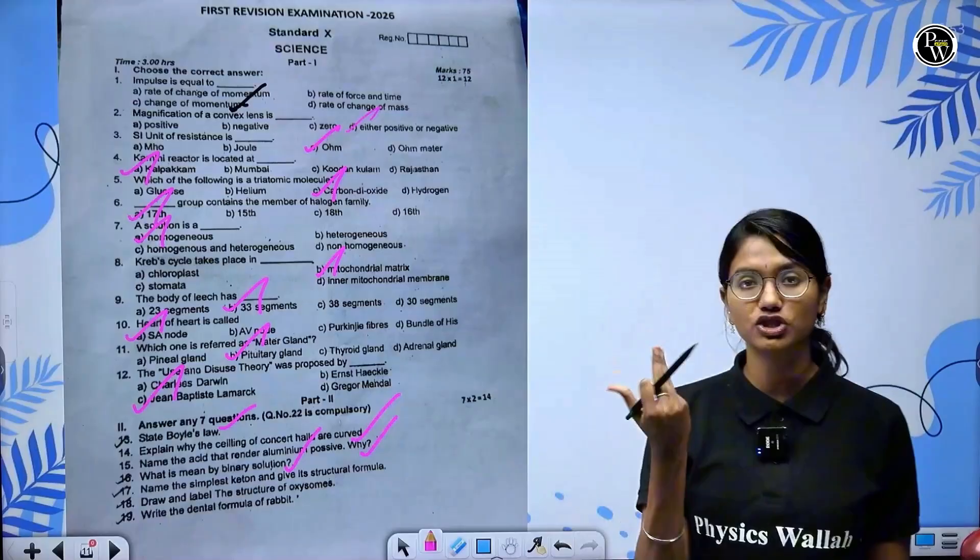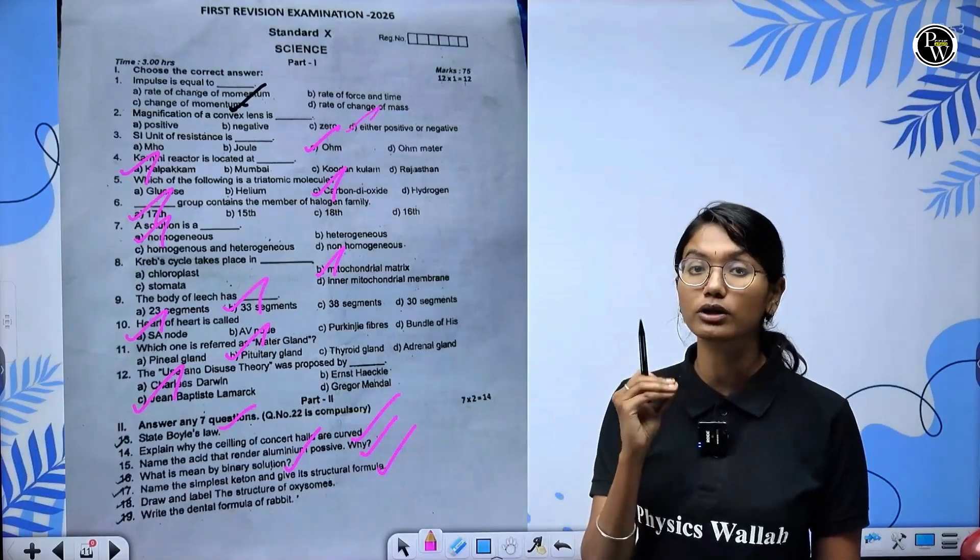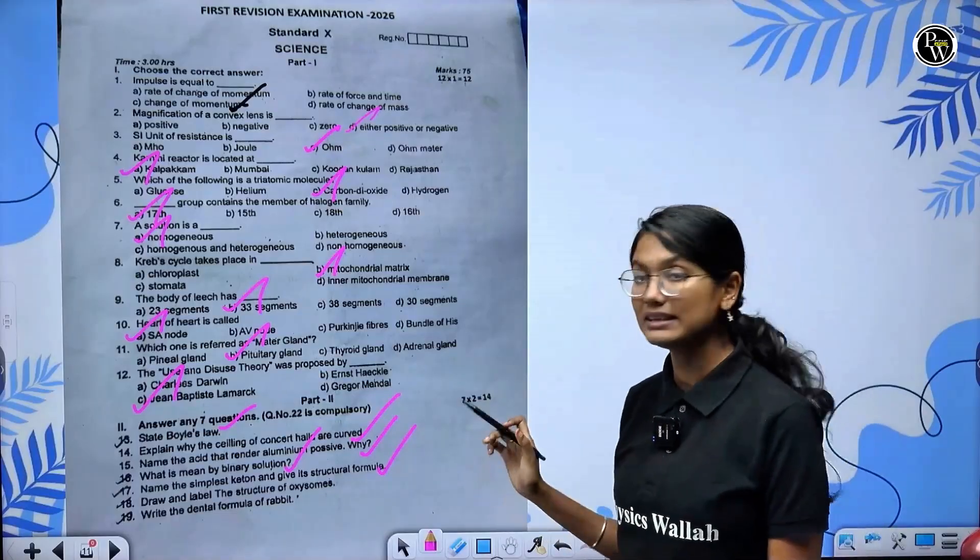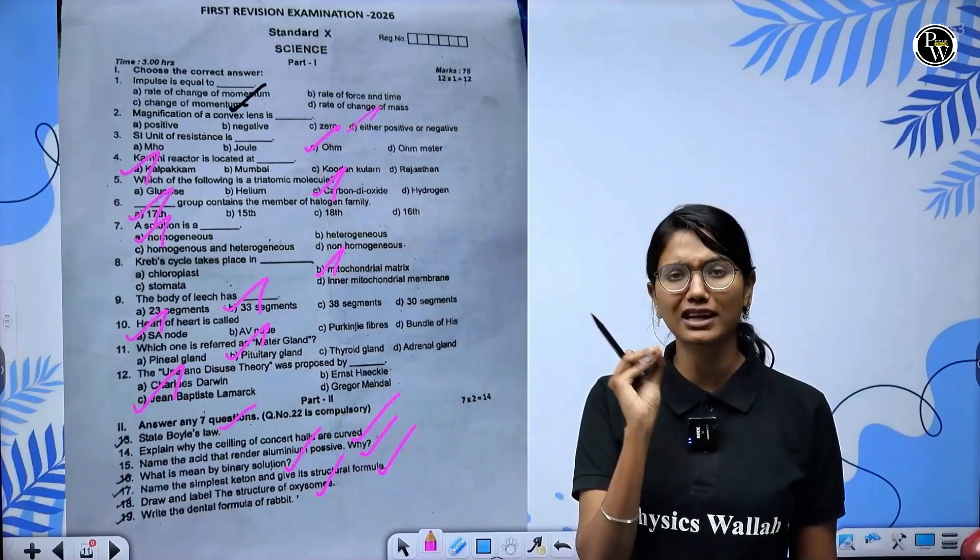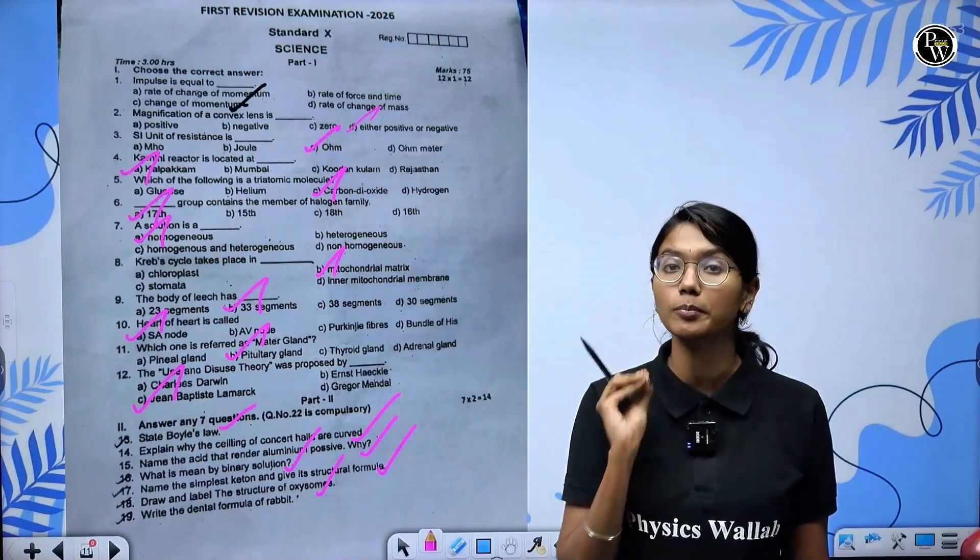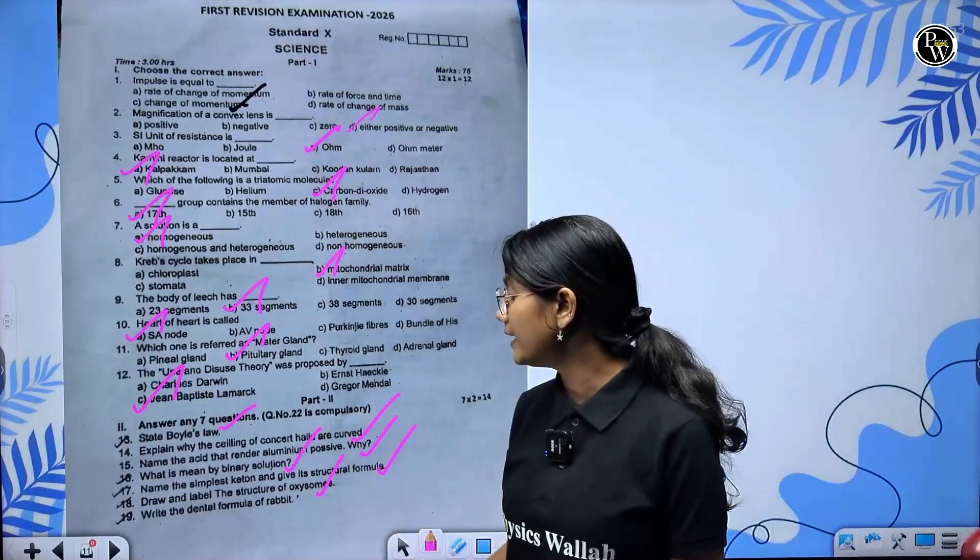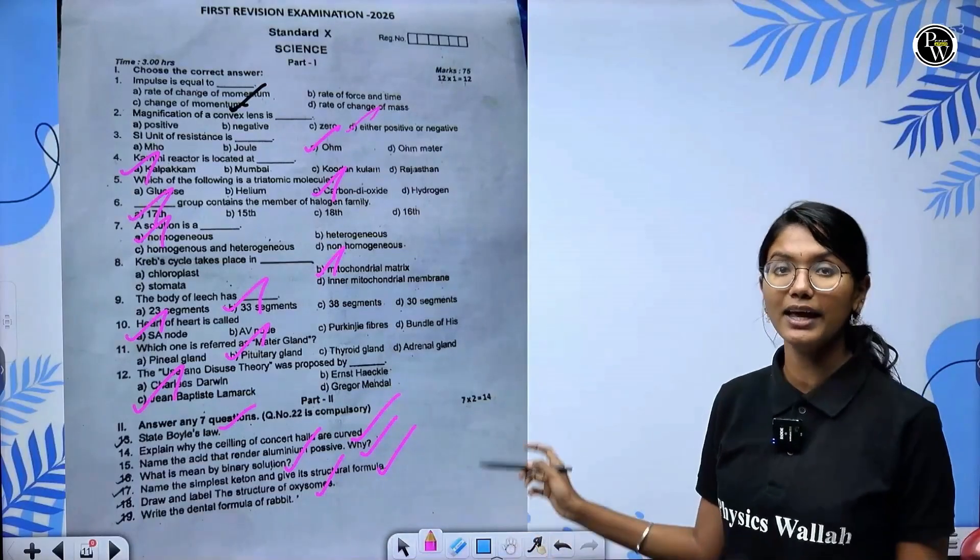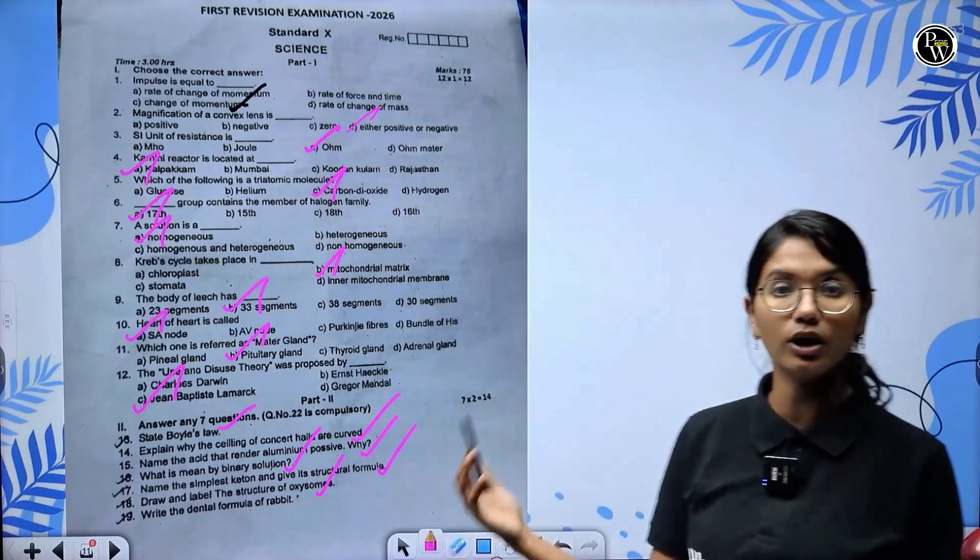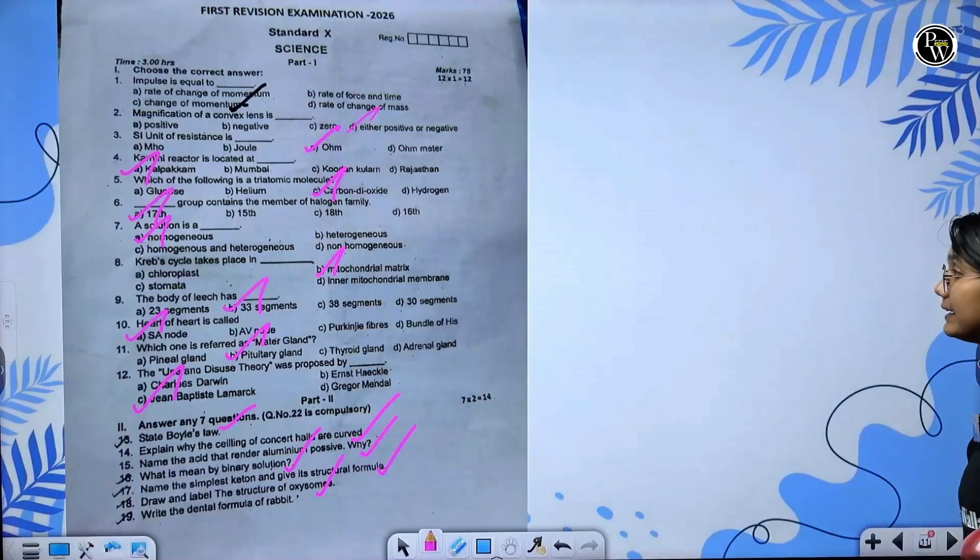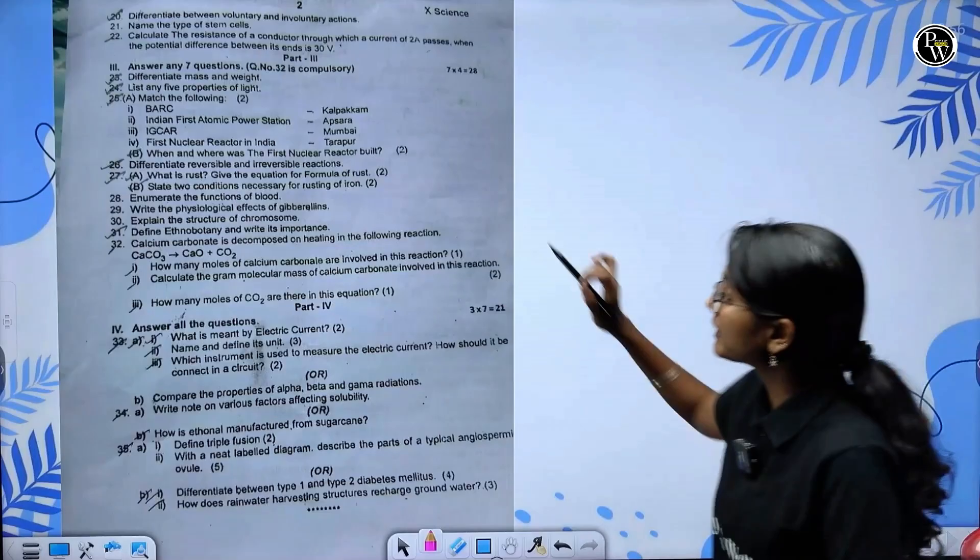What is meant by binary solution? Two components in a solution is binary solution. Simplest ketone - acetone, formula CH3COCH3. Draw and label the structure of oxysome - it's a small diagram but very important in plant anatomy and physiology. Dental formula of rabbit - you tell me in comment section, I want you to answer it.